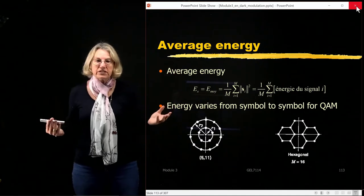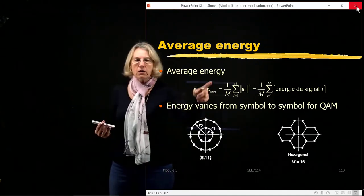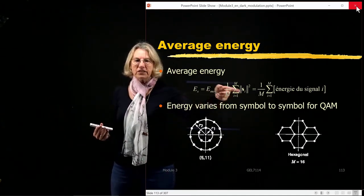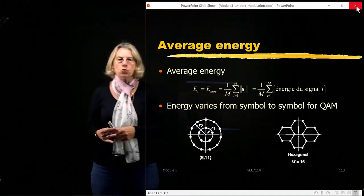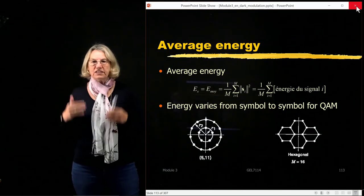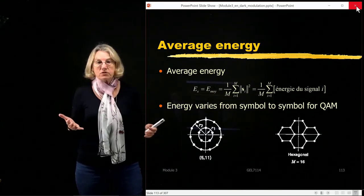It's straightforward: we take 1 over M and sum over the energy of each one of the individual symbols.